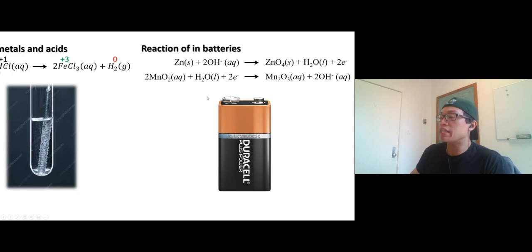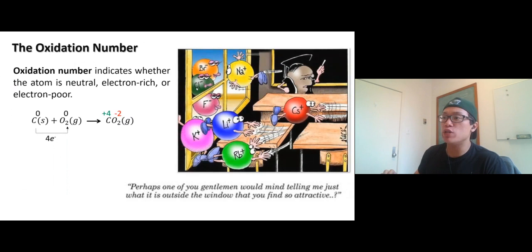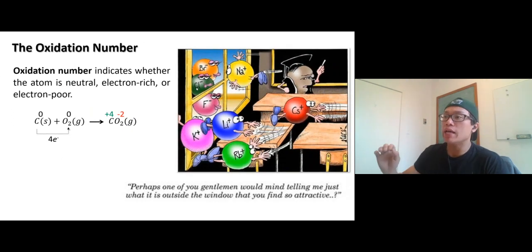Now we use the oxidation number to guide us, to keep track of electrons—who loses electron, who gains electron. That's why we have to talk about the oxidation number. The first thing you need to know is how to calculate the oxidation number. All right, let's talk about this on the next video.